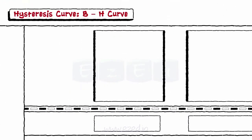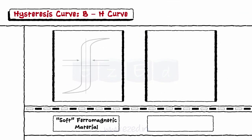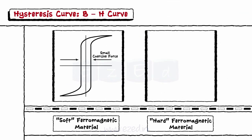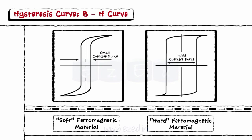For soft iron ferrite materials, the hysteresis curve is very narrow, and for hard iron ferrite materials, the curve is very broad.